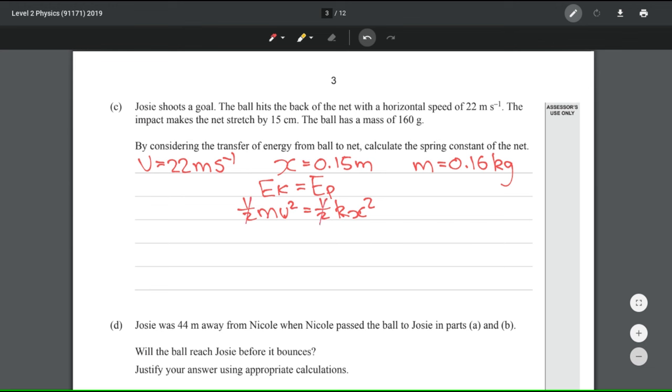First of all, we can cancel out the halves by dividing both sides by half. Now, the only step we need to do now is divide by x squared. I'm also going to flip the equations around, so I have k on this side. And that leaves me with mv squared divided by x squared. If we put our numbers in, that gives me 3441.777. Because the question gives us two significant figures, and that's the lowest amount of significant figures, I'm going to write that in two significant figures, which gives me 3400. And the units of the spring constant are newtons per metre.